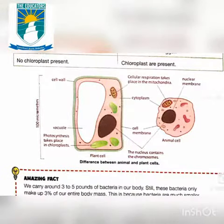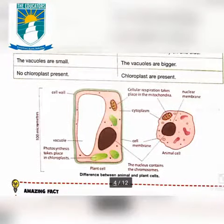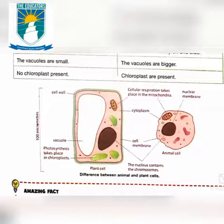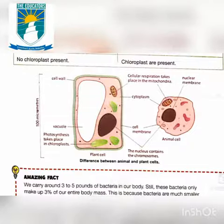Students, differentiate between animal and plant cells. You see a picture on the screen — draw this picture on any paper, make a short video and picture, and send it to the helpline number. That's all for now, goodbye.